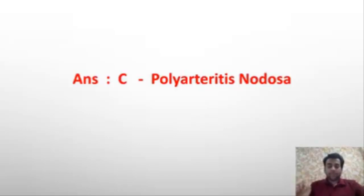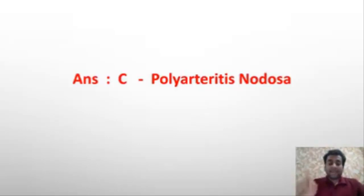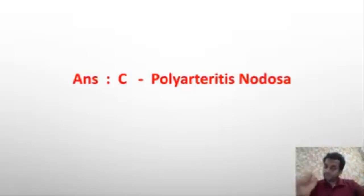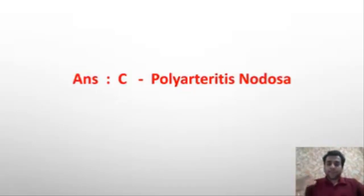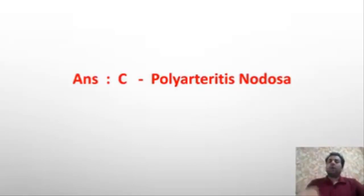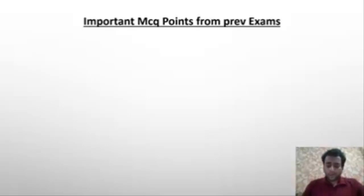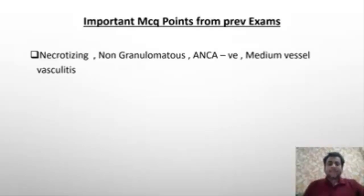Polyarteritis nodosa is a medium vessel vasculitis. The second example of medium vessel vasculitis is Kawasaki disease, which you have been taught in your pediatric classes. Now let us go through the MCQ points from polyarteritis nodosa which have straightforwardly been asked in previous year exams.